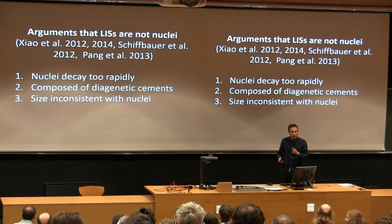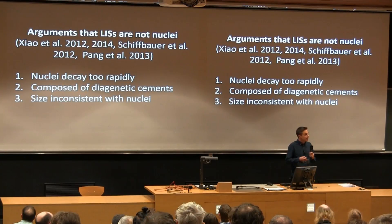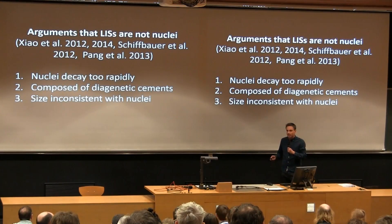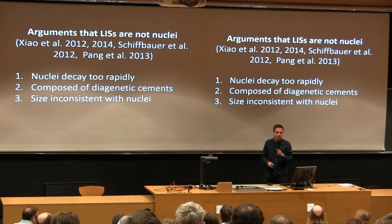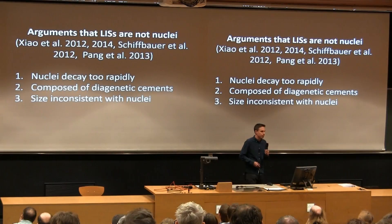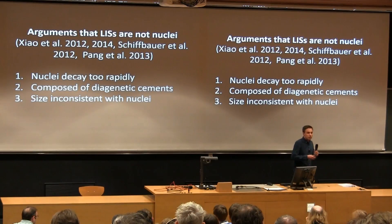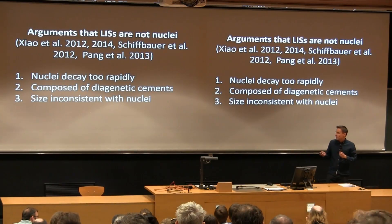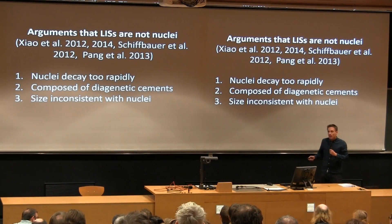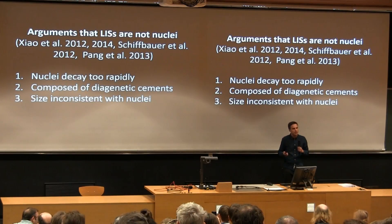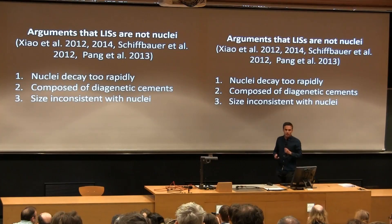The structures are too large during early stages, and the cells of putative later stages are too small to contain the same genetic material. So what we wanted to do was gather new data to assess these three arguments and ultimately to differentiate between competing interpretations of these structures.